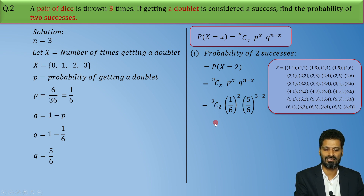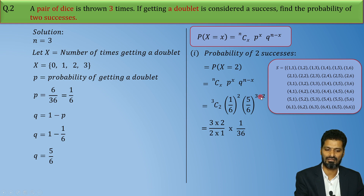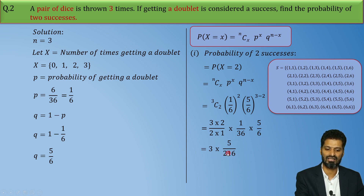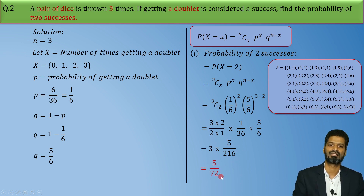Now simplifying 3C2 = (3×2)/(2×1). Then (1/6) squared = 1/36, and (5/6) raised to 1 = 5/6. The 2s cancel, leaving just 3. Multiplying: 1 × 5 = 5 and 36 × 6 = 216, giving 3 × 5/216 = 15/216. Simplifying — 3 divides into 216 giving 72 — the final answer is 5/72.